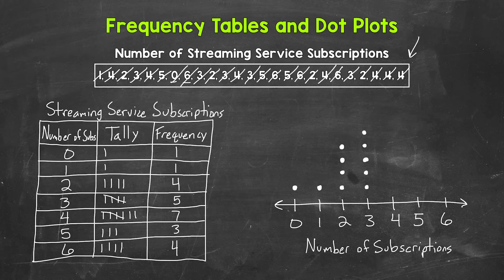Four subscriptions, we have seven people. So seven dots. One, two, three, four, five, six, seven. How about five subscriptions? Three. So we need three dots. One, two, three. And then lastly, six subscriptions. We have four people. So we need four dots. One, two, three, four.